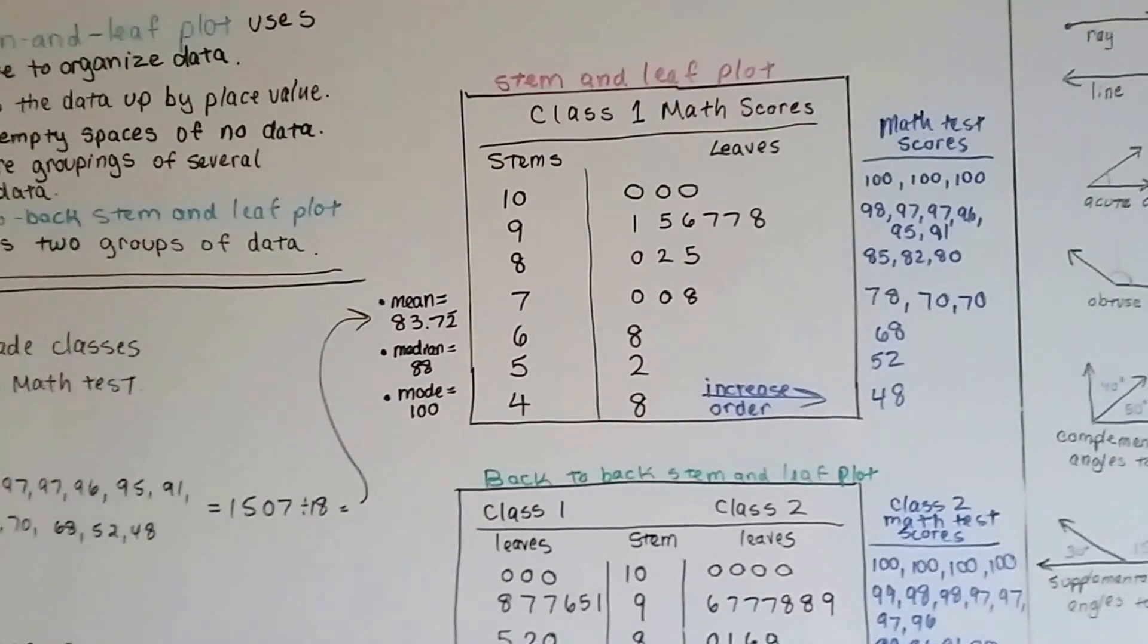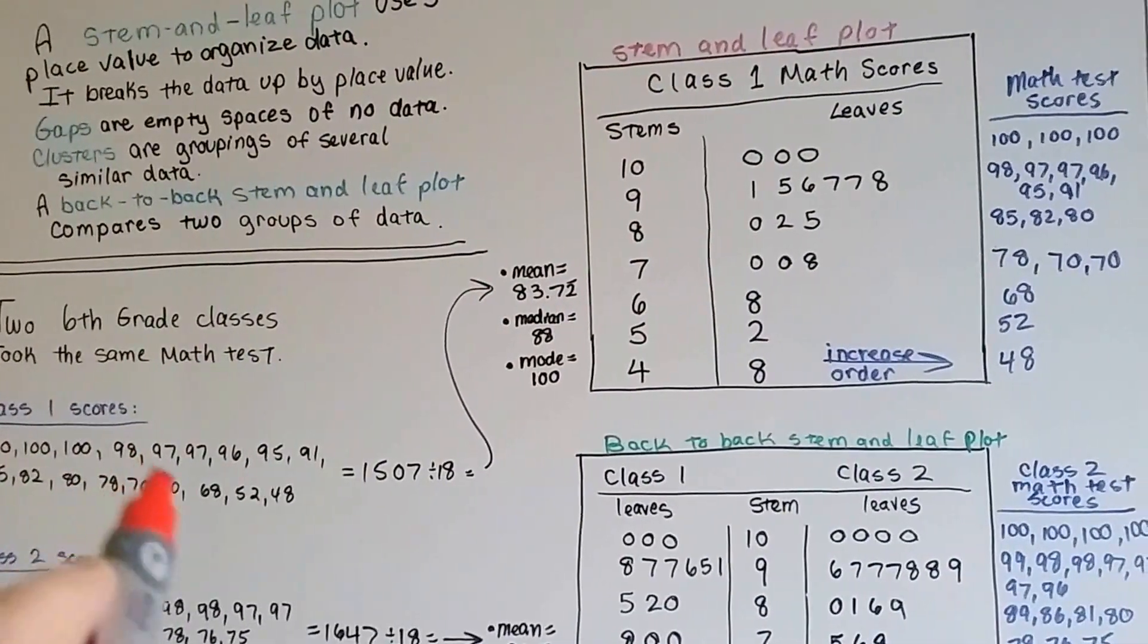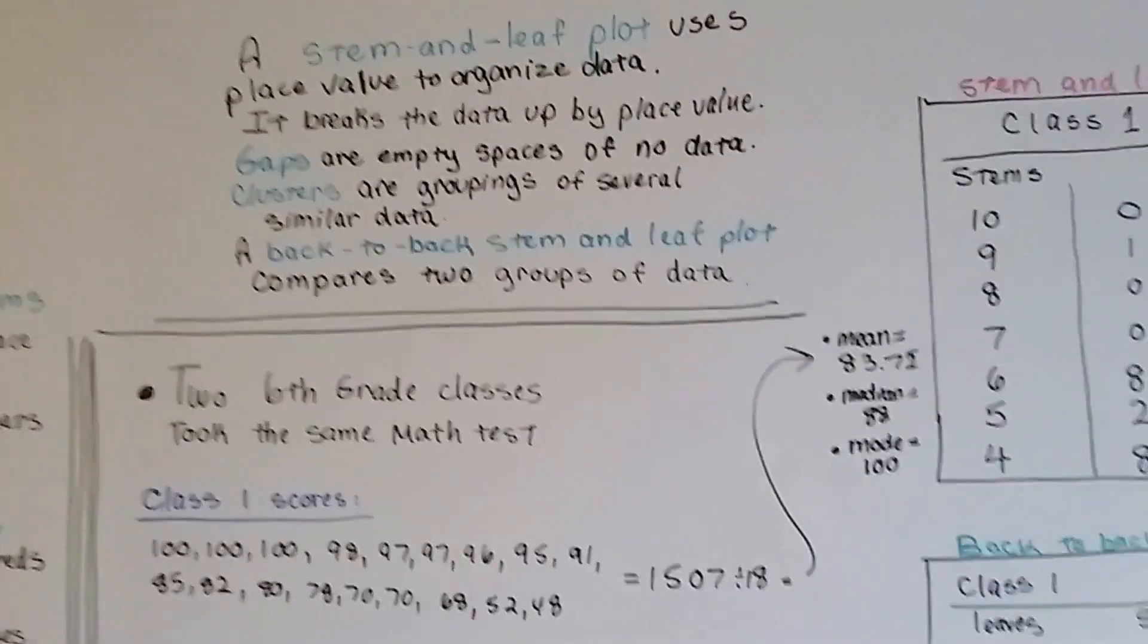and you can analyze it very quickly and much easier than just looking at a big pile of numbers like this, especially if they're not in order. So now you know what a stem and leaf plot is.